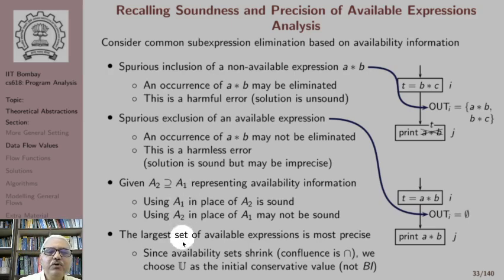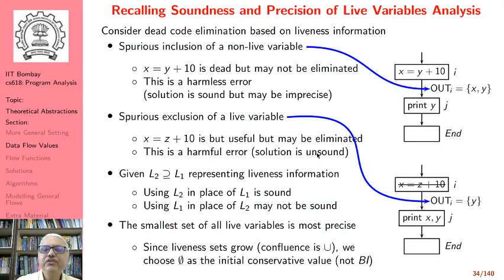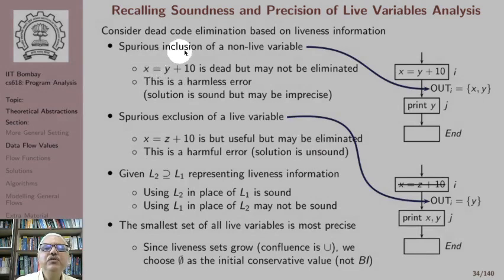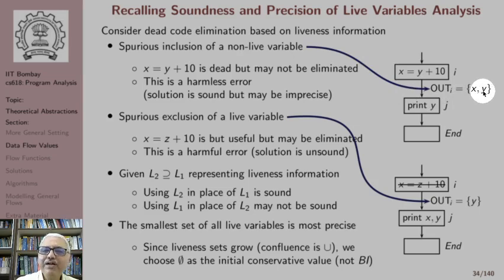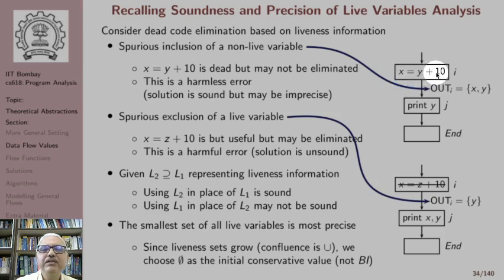We want to compute the largest possible set of available expressions, and therefore we begin with the universal set as the initial conservative value. By contrast, in live variables analysis, spurious inclusion of a non-live variable is a harmless error — we might say X is also live when actually X is not live. We will not be able to do dead code elimination, but this is perfectly fine; the solution is sound but may be imprecise.